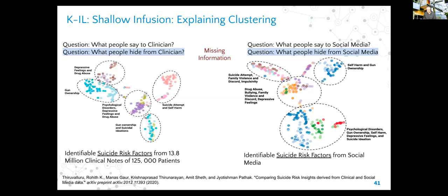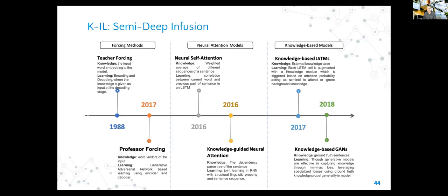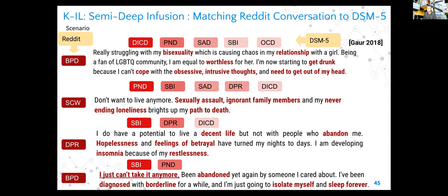One of the most important activities in autonomous vehicles is scene similarity detection. We show that we can aggregate scenes that are similar far better by using knowledge graphs than without. For the semi-deep infusion, here's an interesting example: on the left-hand side you see data coming from different Reddit communities - the first is bipolar disorder Reddit, the third is depression Reddit. On the top you see different concepts from medical literature used to understand mental health - called DSM-5 - which helps define bipolar disorder, suicide ideation, and other conditions.